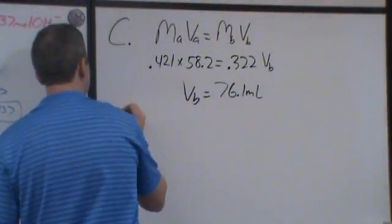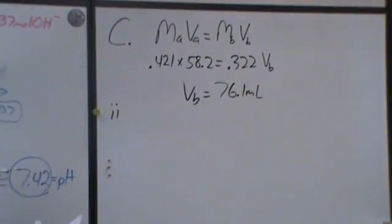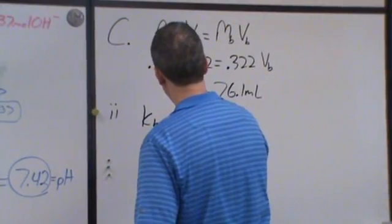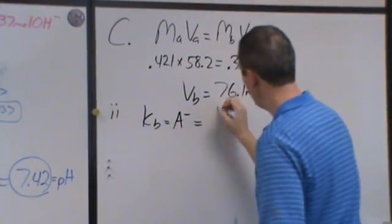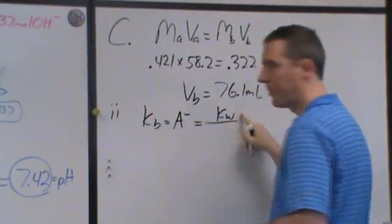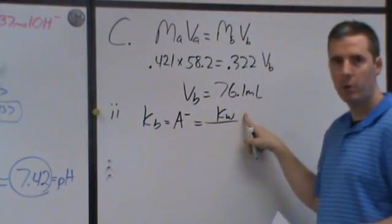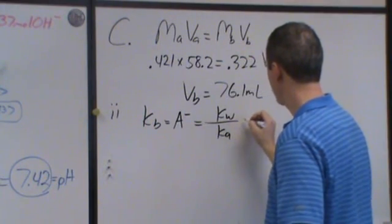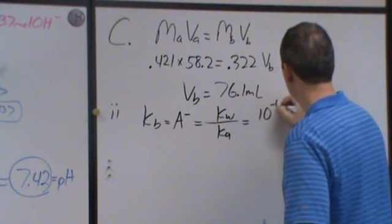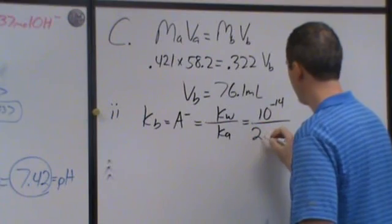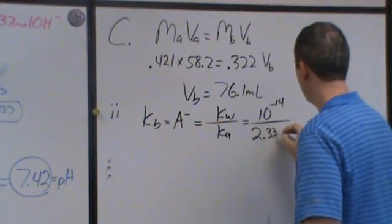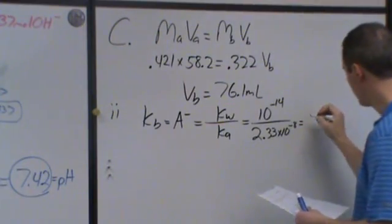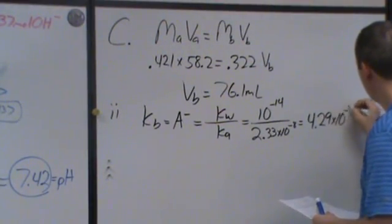The second part of C says, what is the KB value? So if I had just this A minus, what is the KB of that? And then KB will, of course, be equal to your equilibrium constant for water. So we're assuming at our normal temperature would be 1 times 10 to the minus 14 divided by your Ka. So I'm going to plug in 10 to the minus 14 divided by 2.33 times 10 to the minus 8. And I get my KB. It is 4.29 times 10 to the minus 7.